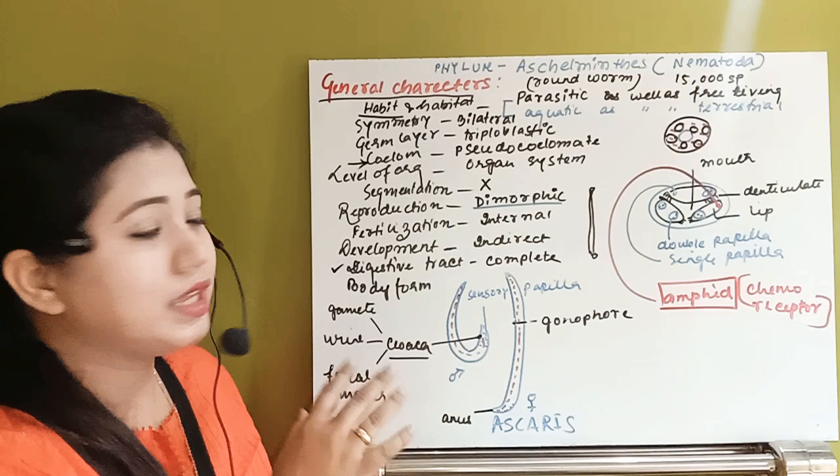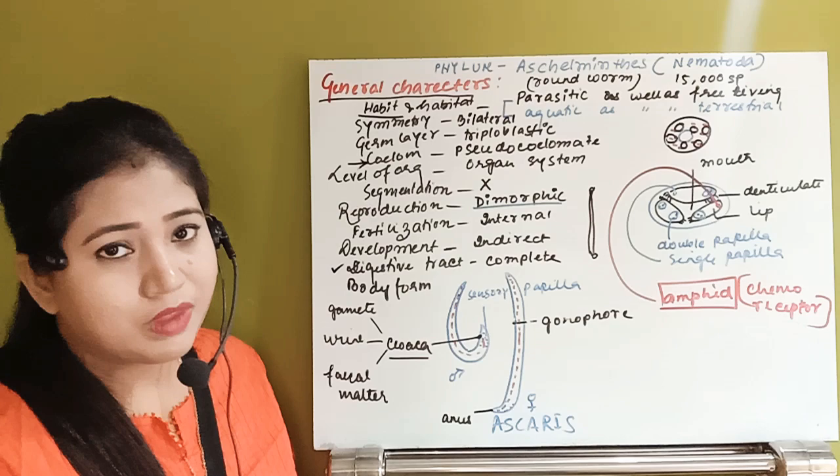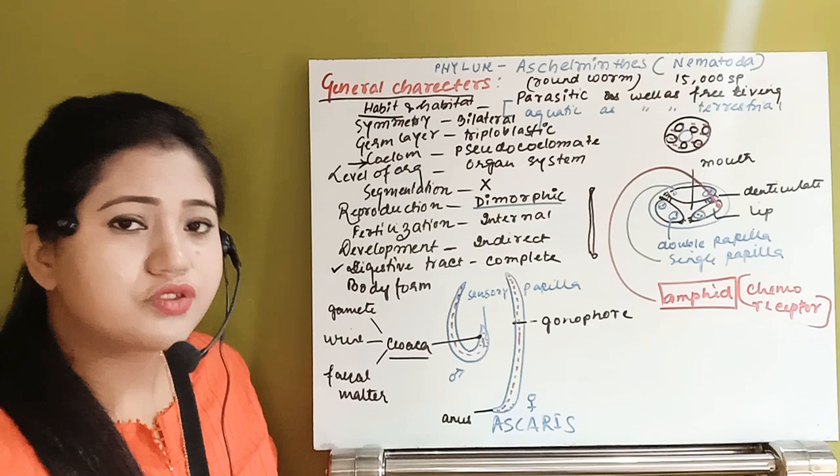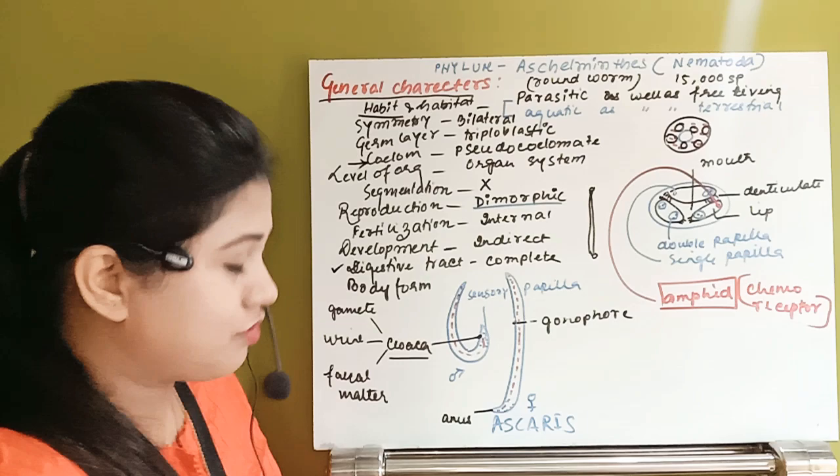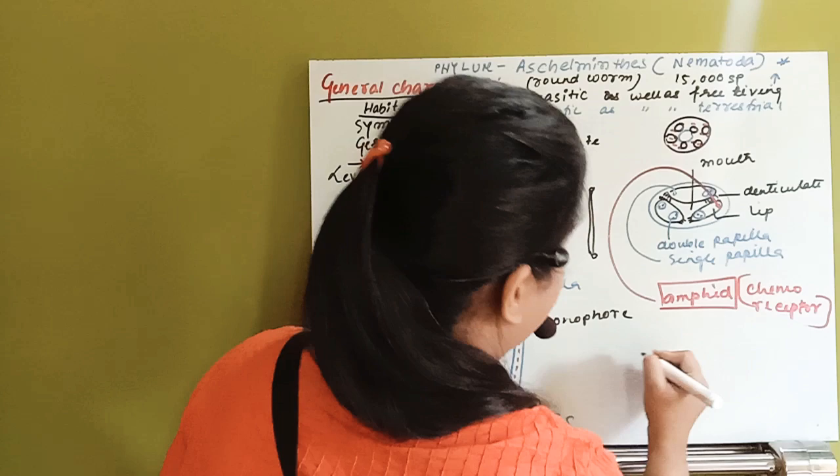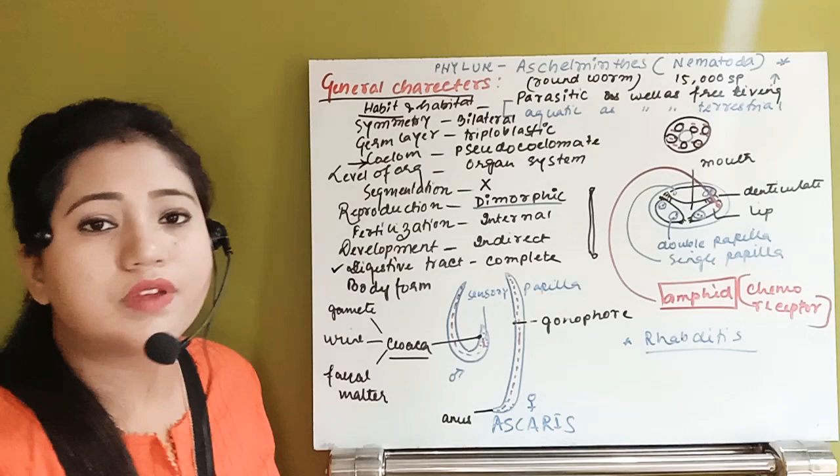To summarize, Aschelminthes can be parasitic or free-living, aquatic or terrestrial. One example of a free-living species in this phylum is Rhabditis.